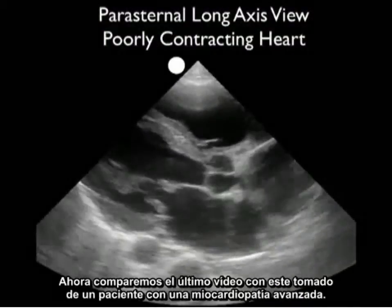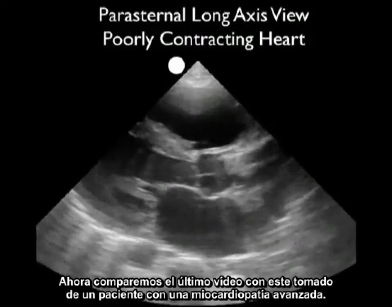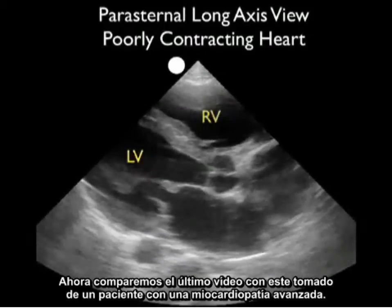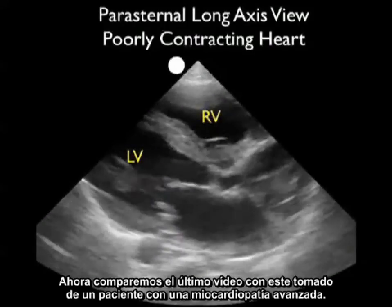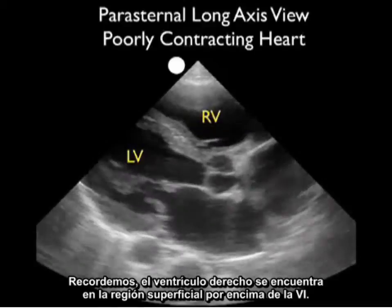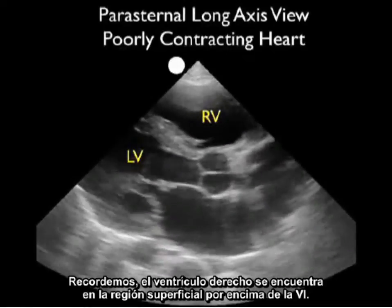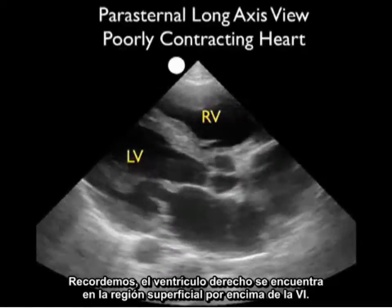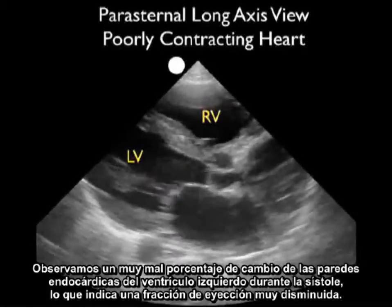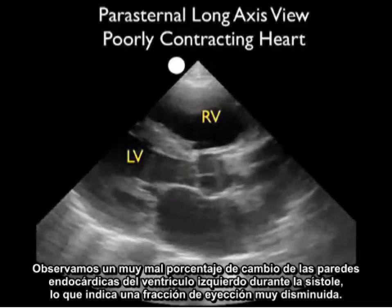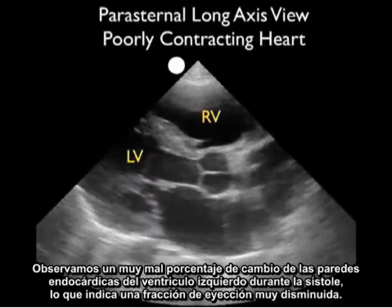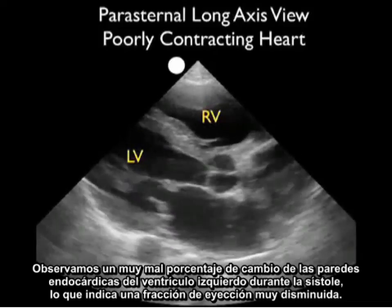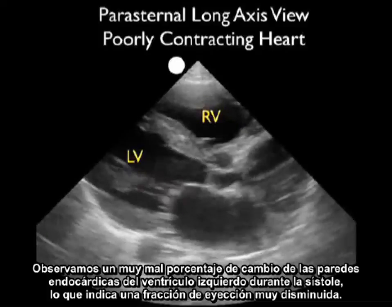Now let's contrast that last video clip with this one taken from a patient with an advanced cardiomyopathy. We can identify the left ventricle and the right ventricle in a superficial location above the LV. Notice the very poor percentage change of the endocardial walls of the left ventricle during systole, indicating a very decreased ejection fraction.